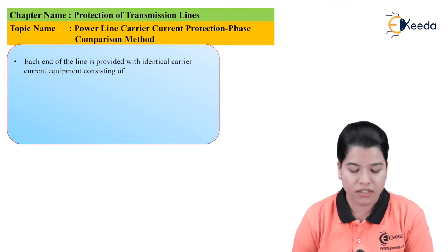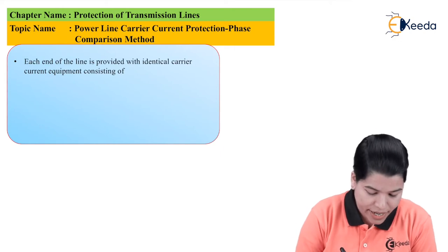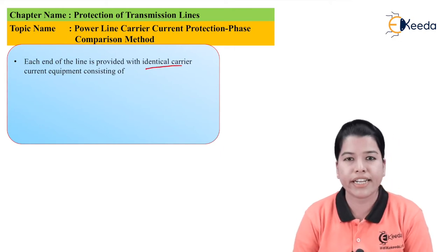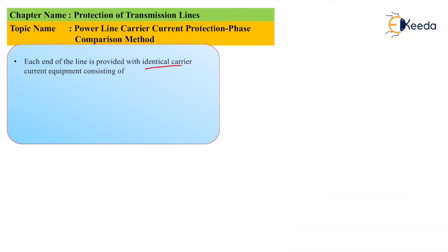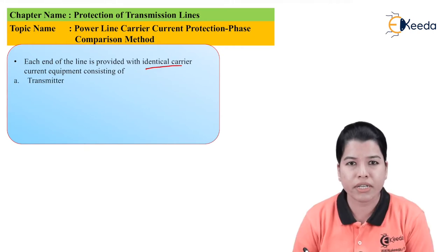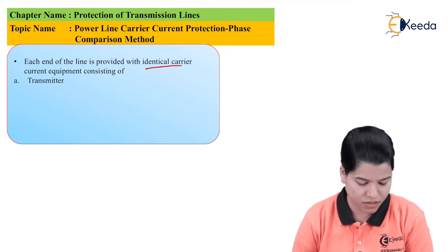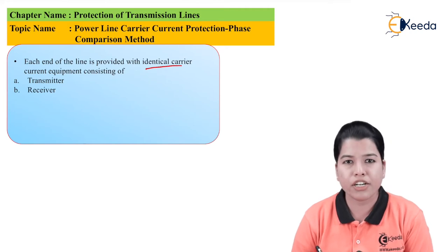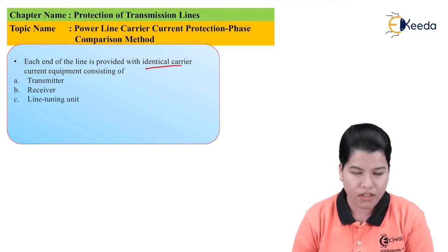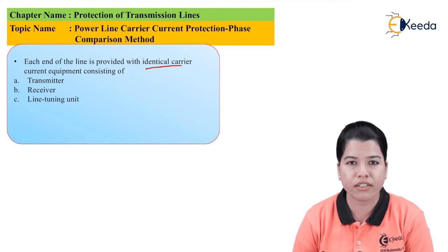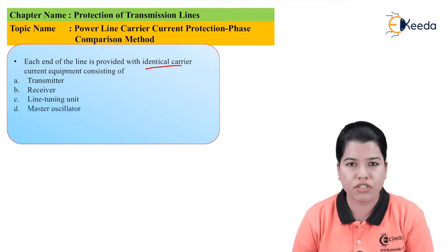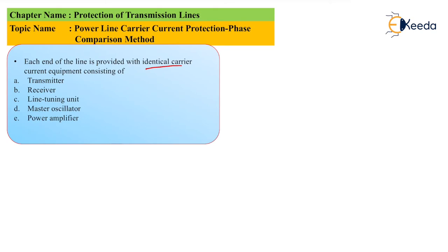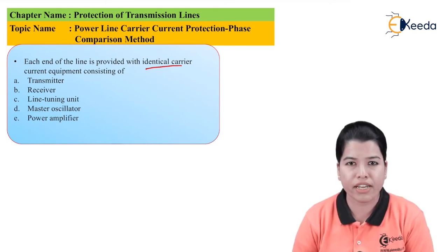Each end of the line is provided with identical carrier current equipment, which comprises: first, a transmitter to transmit the carrier current signal; second, a receiver to receive the carrier signal; third, a line tuning unit; fourth, a master oscillator; and fifth, a power amplifier.